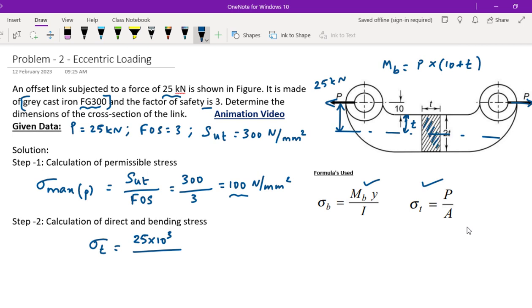Bending stress is equal to Mb into y divided by I. So Mb, you know, is 25 into 10³ into 10 plus T, force into perpendicular distance. Y is calculated for the outer link, the outer layer distance from the neutral axis. That's 2T divided by 2, which equals T. So divided by I. Moment of inertia I for rectangular section uses the formula Bd³ divided by 12. The dimension parallel to the neutral axis is T, and the depth is 2T.